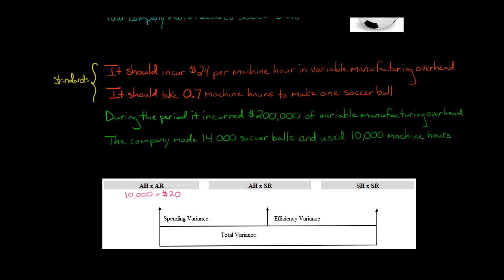Or you could just put the total amount here, which is $200,000. I like to write it all out. So we've got $200,000 here, and then our actual hours times the standard rate. The actual hours is the same as over here, so it's 10,000.